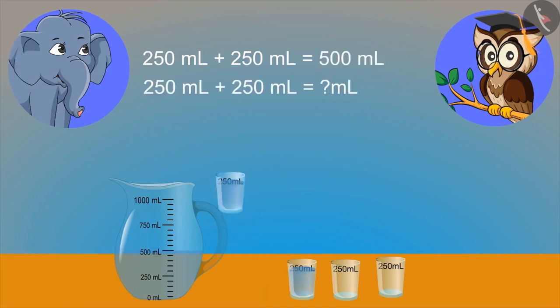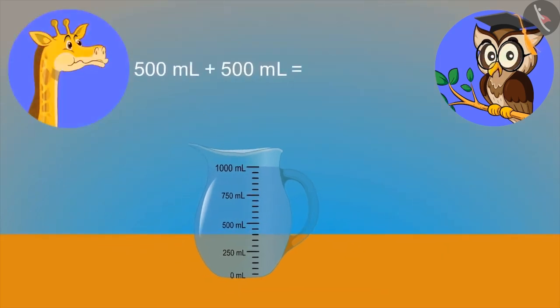If we combine two more glasses of 250 ml water in it, then how much total water will we have? 500 ml and 500 ml means 1000 ml, means 1 litre. Yes, correct.